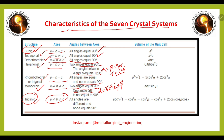For triclinic, the least symmetric system, all angles are different and none equals 90°. The unit cell volumes associated with the different crystal systems are: cubic — a³; tetragonal — a²c; orthorhombic — abc; and corresponding formulas for hexagonal, rhombohedral, monoclinic, and triclinic.